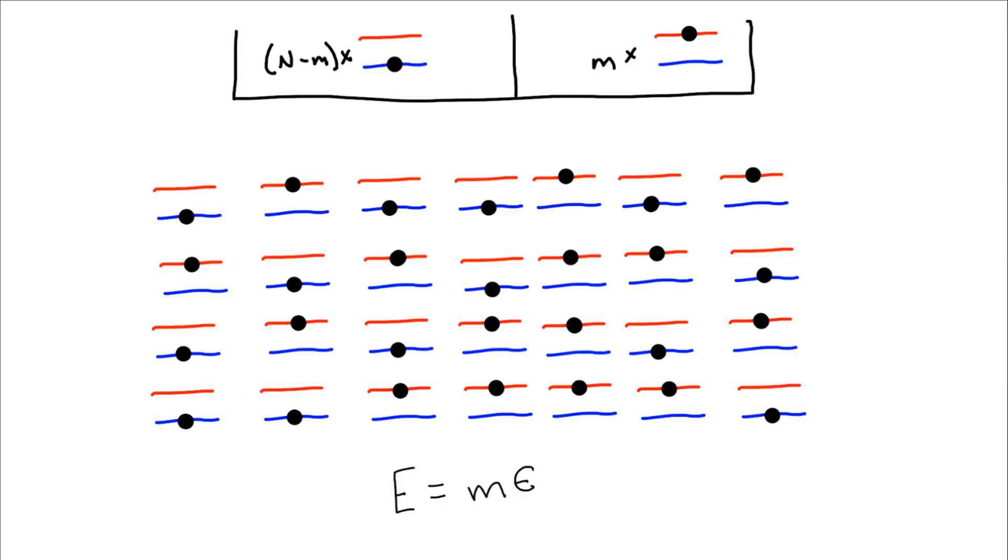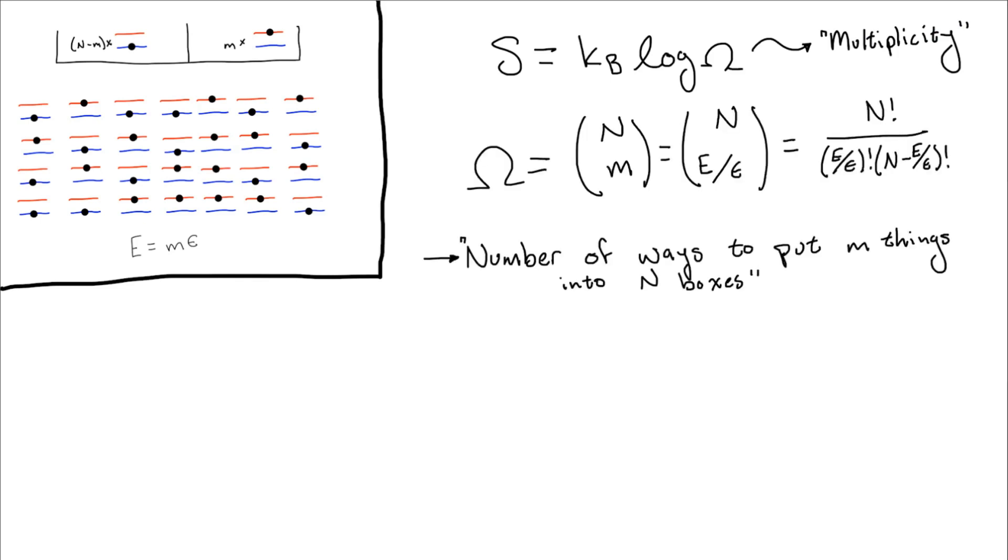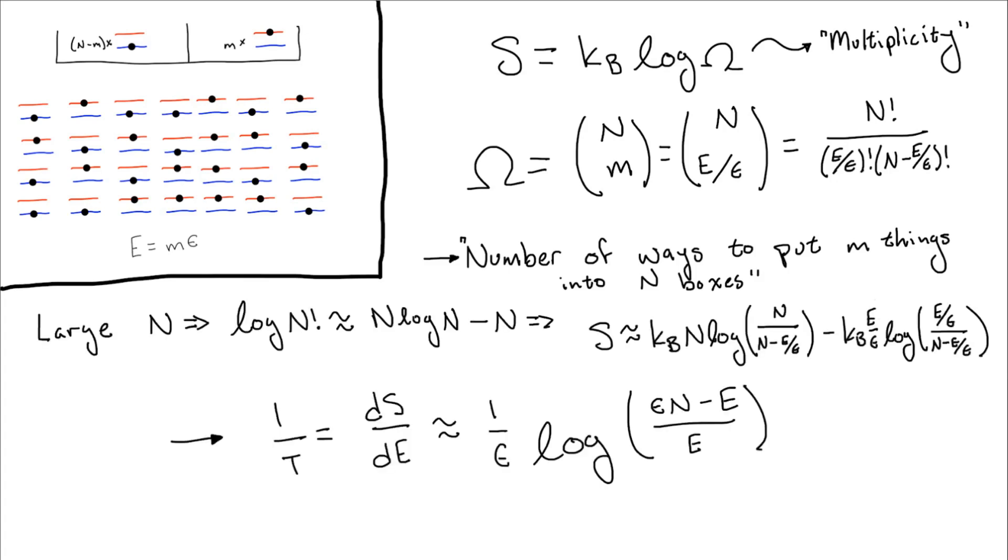To find the entropy, all we have to do is find the multiplicity, or the number of different ways of distributing these m units of energy among the n particles. This is just given by the binomial coefficient n choose m, or n choose E over epsilon. Now we just take the logarithm of this multiplicity to give the entropy, and take a derivative to get the inverse temperature.